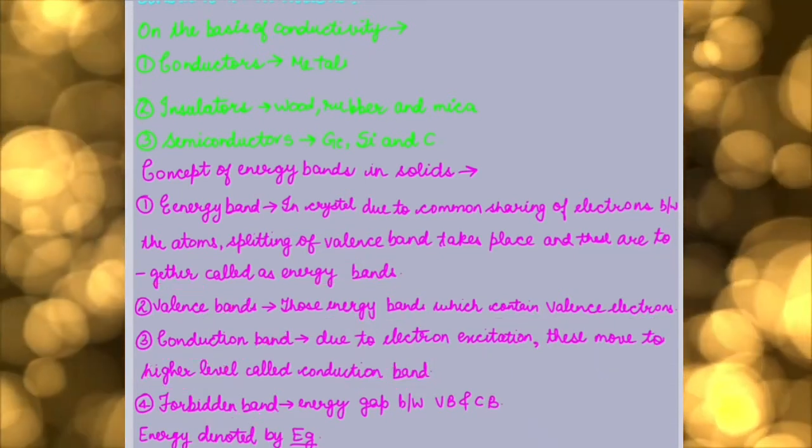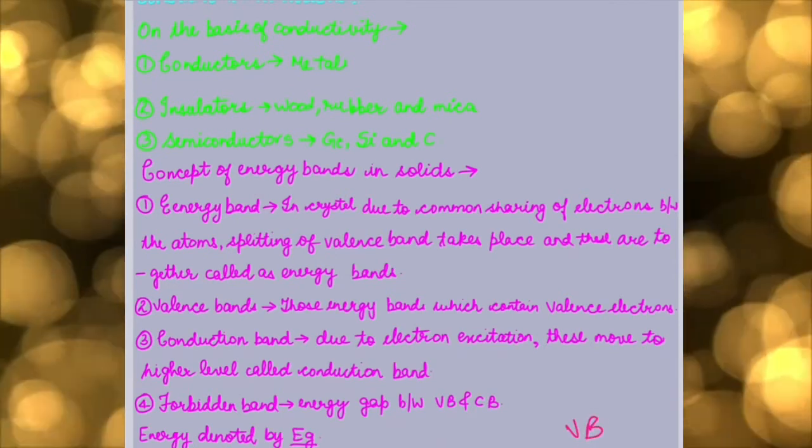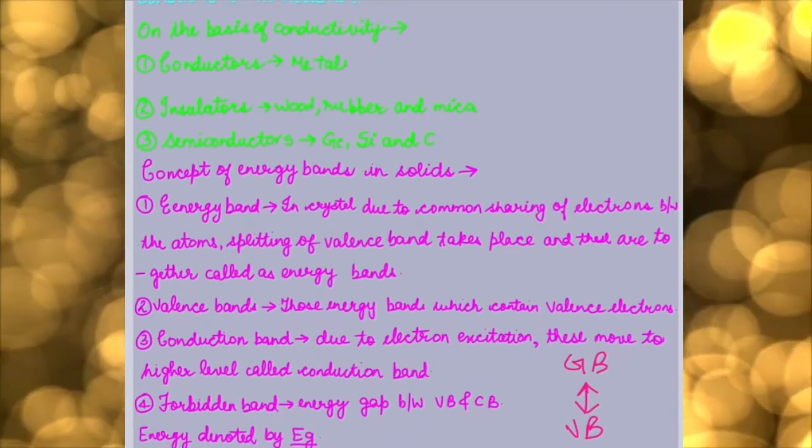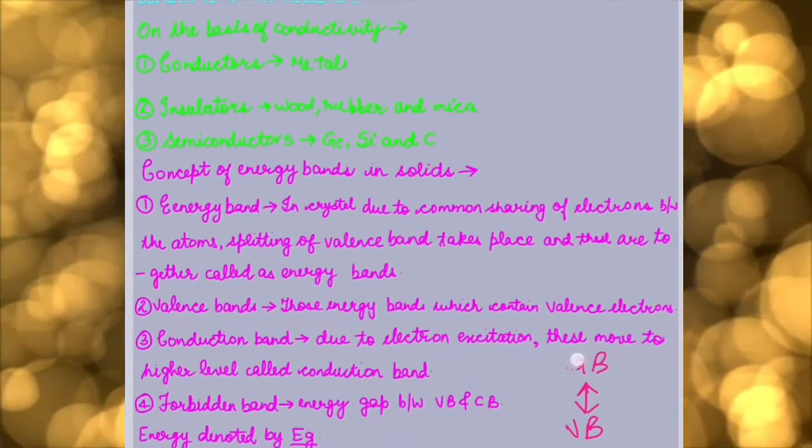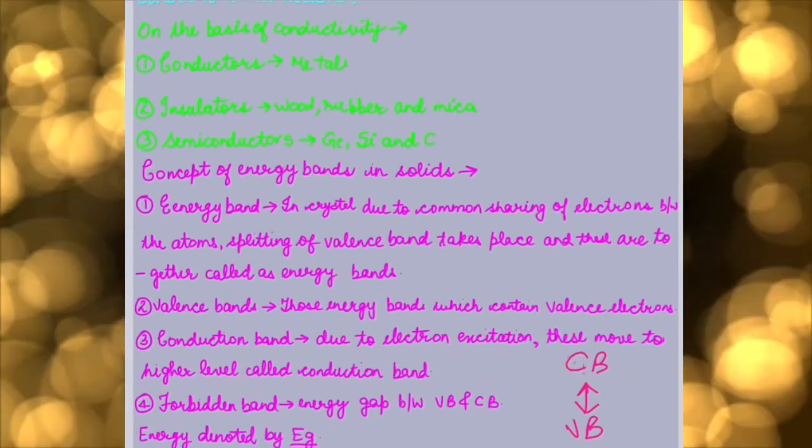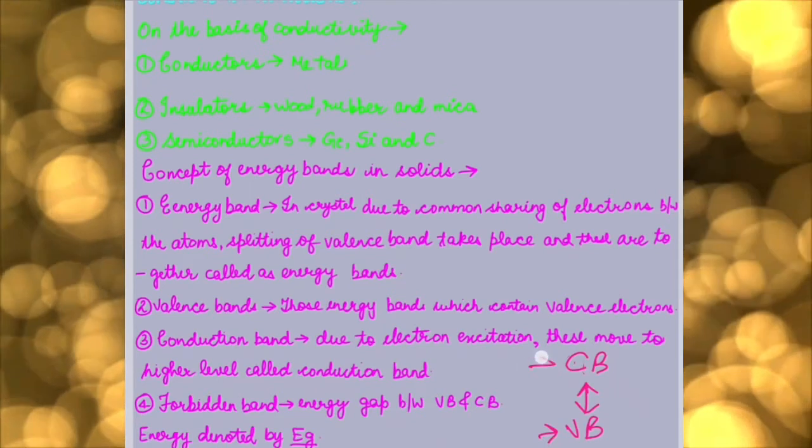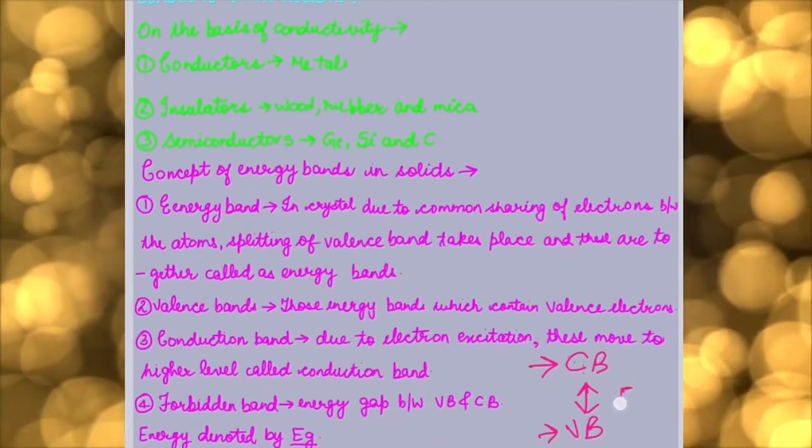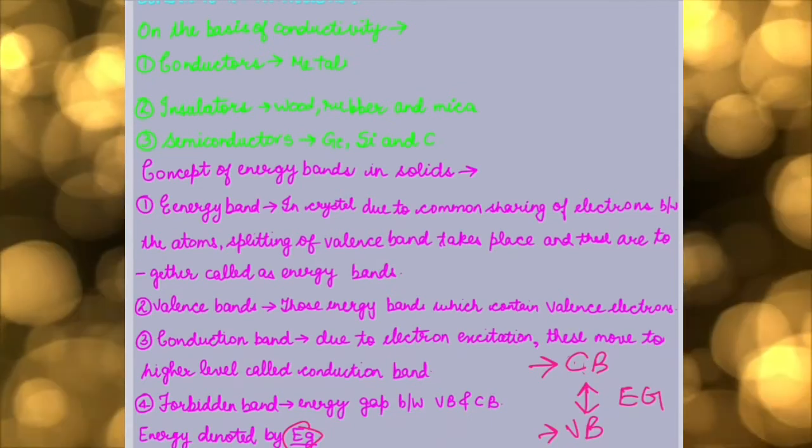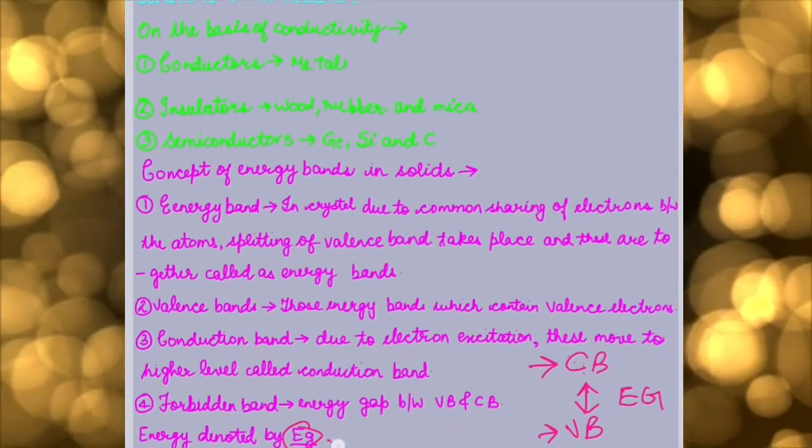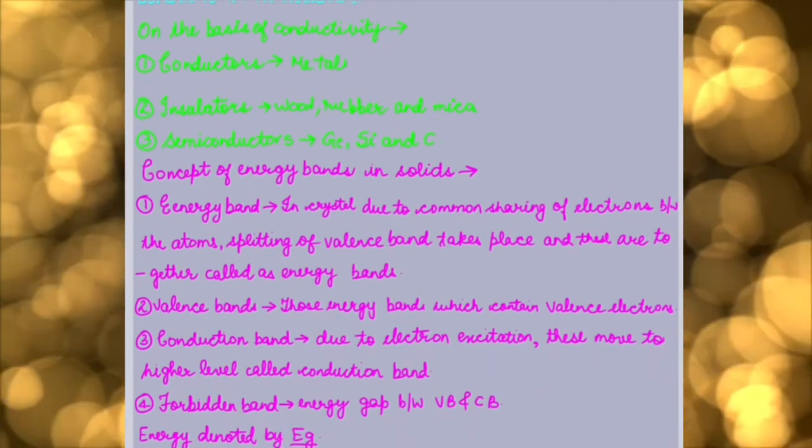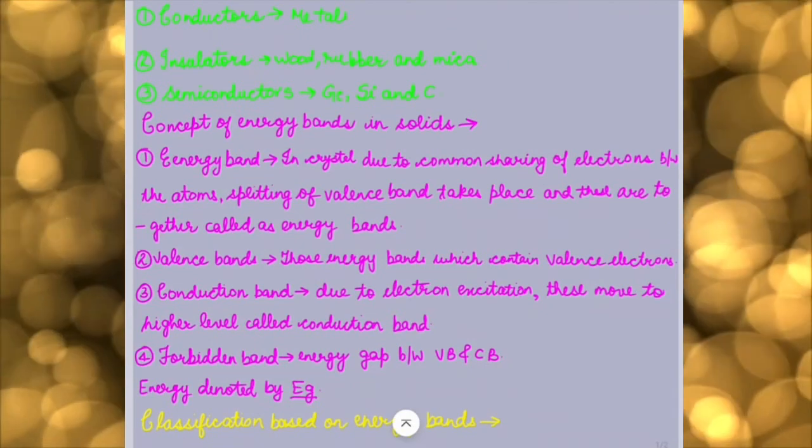What is a forbidden band? It is actually the band between the valence band and the conduction band. Suppose I have here my valence band will be down as the electrons are in ground state, and here is my conduction band. So the gap between them, the gap between valence band and conduction band, will be known as energy gap and this is denoted by Eg. So this is a forbidden band and Eg is the energy required by the electrons to jump from valence band to the conduction band.